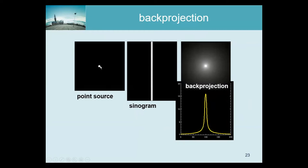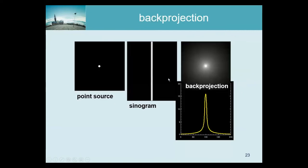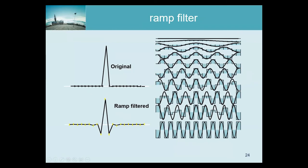If we have an unknown image and acquire a sinogram with a PET or SPECT system, we get an image which we can consider a smoothed version of the original image. We're going to have to do some unsmoothing, and that unsmoothing is the RAM filter. This back projection suppresses frequencies more if they are higher, and the inverse of that is the RAM filter.